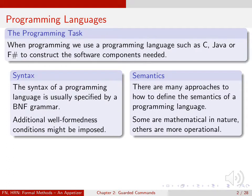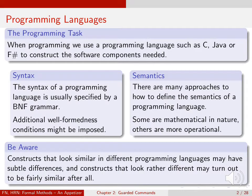The meaning of programming languages are described by giving their semantics. The approach we take in this book is operational in nature. When looking at more than one programming language, it is important to bear in mind that constructs that look the same in different programming languages may actually have subtle differences, and that constructs that look different may actually turn out to be exactly the same.